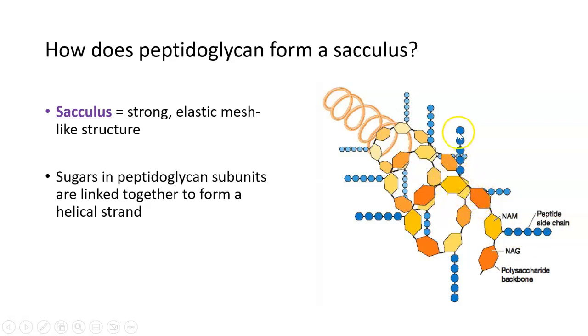Two sugars, peptide chain, which is linked to another subunit and another. And these subunits are linked together and bonded in a helix shape or a helical strand, like you can see here, where all of the sugars are making up the core part of the helix. And those peptide chains are kind of sticking out from all the sides.